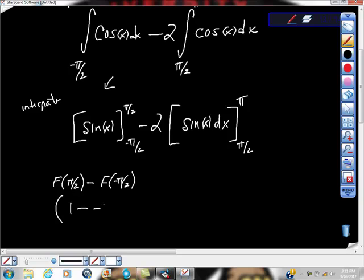So that gives us this, and then we're going to get this negative two here, negative two times. Sine of pi is zero. Sine of pi is minus sine of pi. Sine of pi is negative one, isn't it?